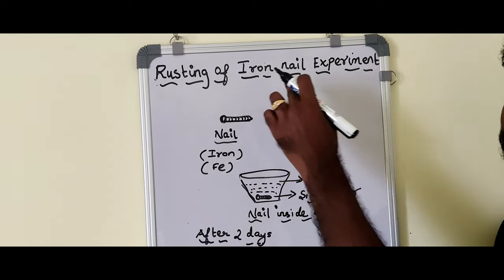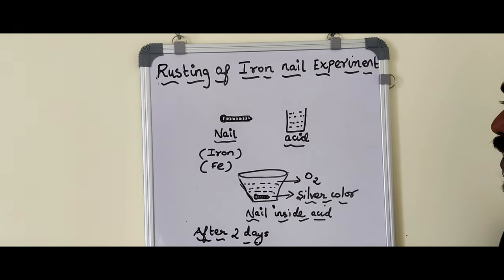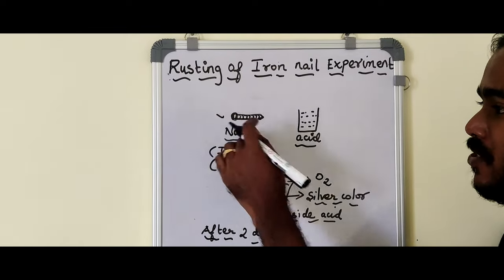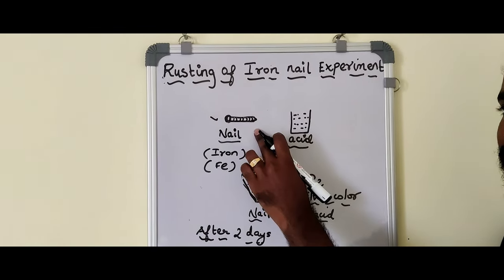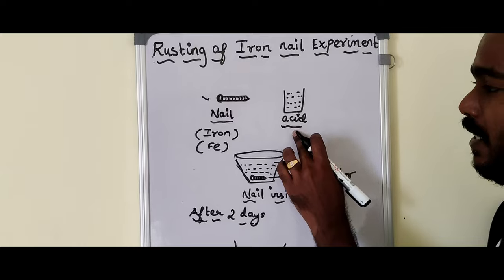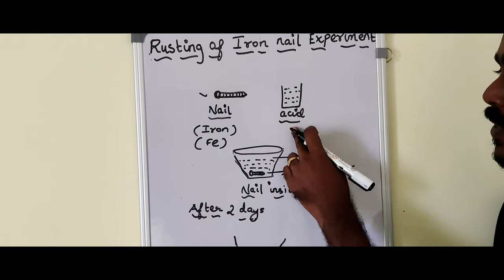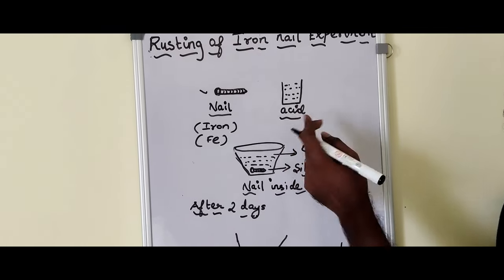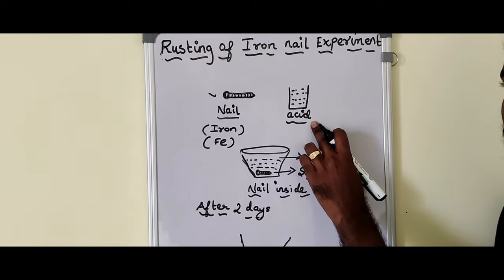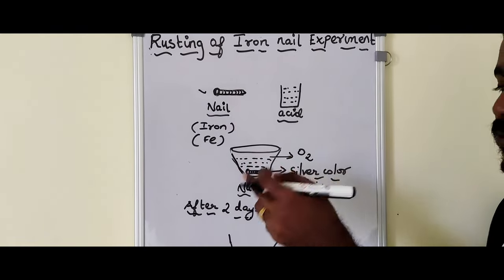If you want to know how to make this experiment, you can get an iron nail — you can get a silver one or a weak one. You can get acid in a weaker solution. You can get acid from a toilet cleaner — it will slow down the reaction.